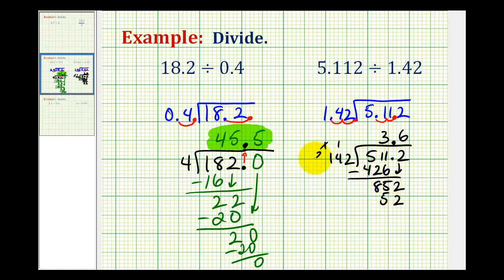6 times 1 plus 2 is 8. So that worked out perfectly. This difference is 0. We have no remaining digits, so we're done. This quotient is equal to 3.6 or 3 and 6 tenths, which would be the quotient to the given division problem as well.